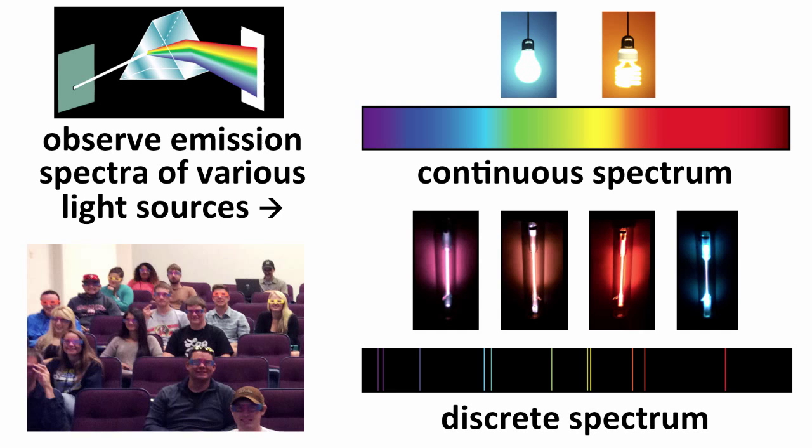This is the spectrum of mercury. And notice, unlike the continuous spectrum where we have all the colors of the rainbow, purple sort of smears into blue, into green, into yellow, into orange, into red, here we have only a few specific lines of purple, and blue, and yellow, and orange, and red.